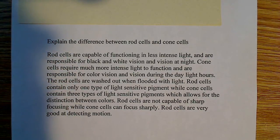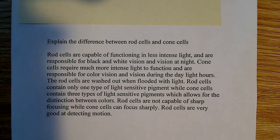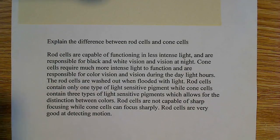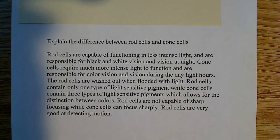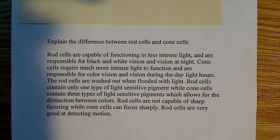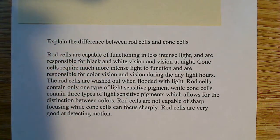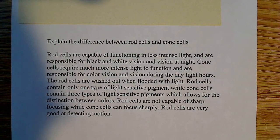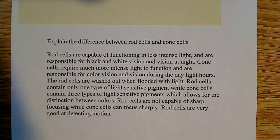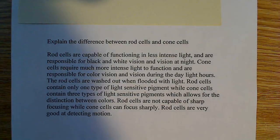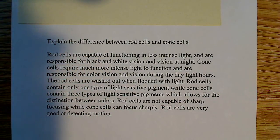The cone cells require much more intense light to function. So in order for a cone cell to be stimulated, you need more intense light — that's something that's not required for rod cells. It's responsible for your color vision and vision during the daylight hours, vision when there's high light conditions. So rod cells: low light conditions; cone cells: high intensity light conditions, where there's plenty of light to reach those cells.